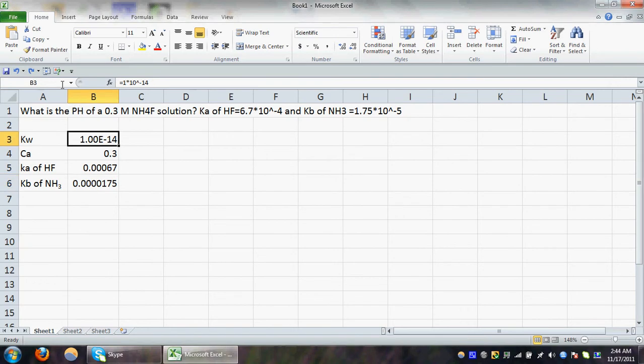To do so, we will go at the top. I will fix the value of Kw, I will type Kw, hit enter. I will fix the value for Ca, put the Ca, hit enter. To fix the value of Ka of HF, I will put KAH, hit enter.